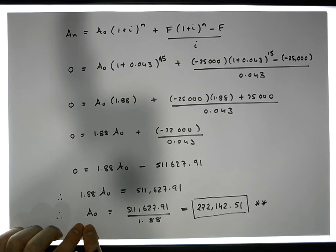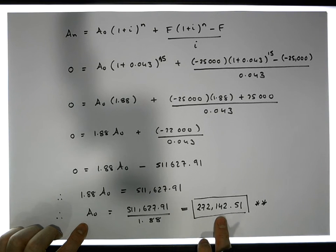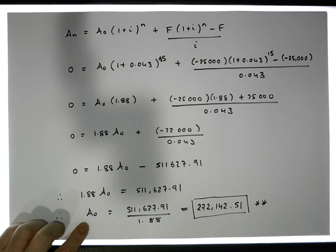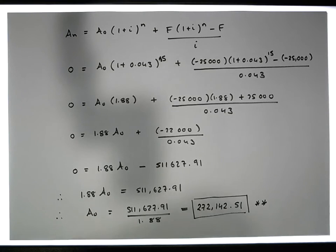So the initial amount that I need to put into this account, into this annuity today, is 272,142 euros and 51 cent for me to purchase this particular annuity that will pay me 25,000 euros for each year over 15 years.